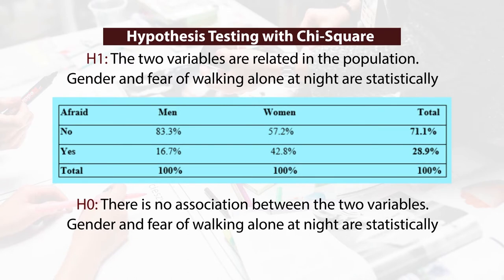The null hypothesis states there is no association between the two variables — that gender and fear of walking alone at night are statistically independent.